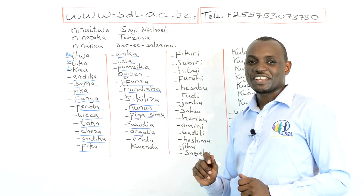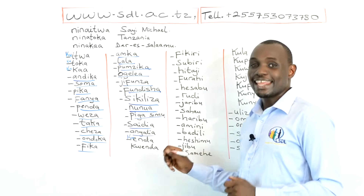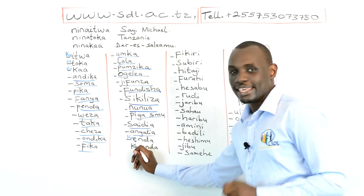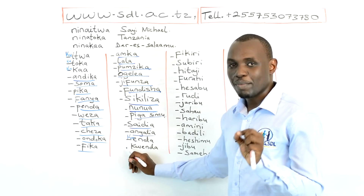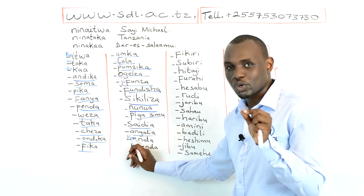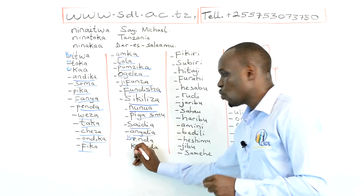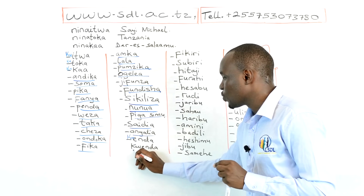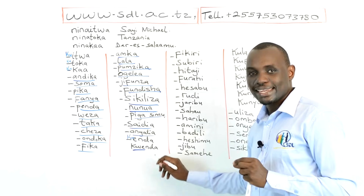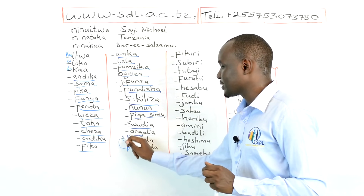Enda means go; Ku Enda means to go. Here is very important: in Swahili, U and E together make the W sound. When U is in front of another syllable it brings the W sound, so Ku Enda can also be said as Kwenda. Ku Enda and Kwenda are the same thing.